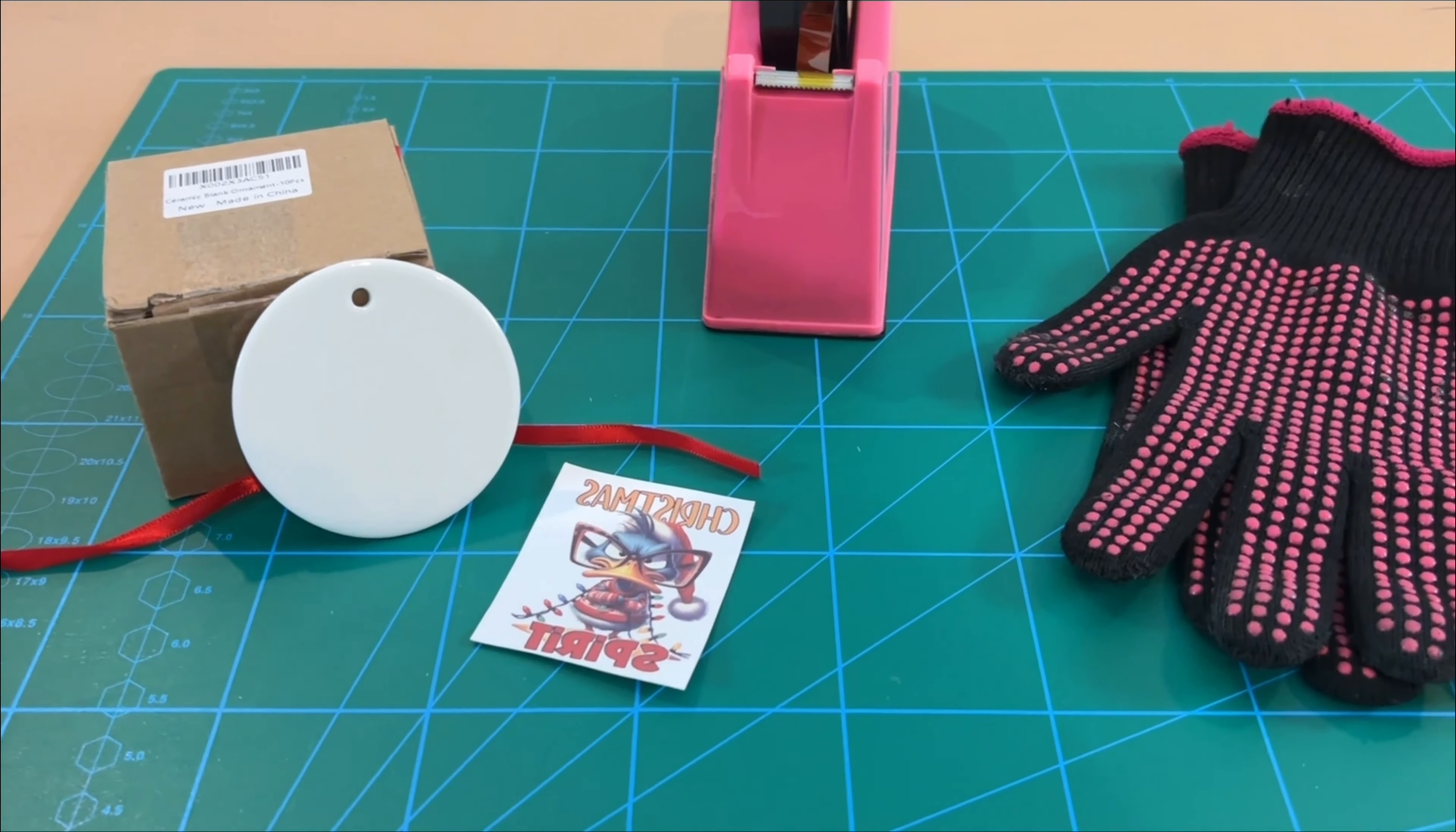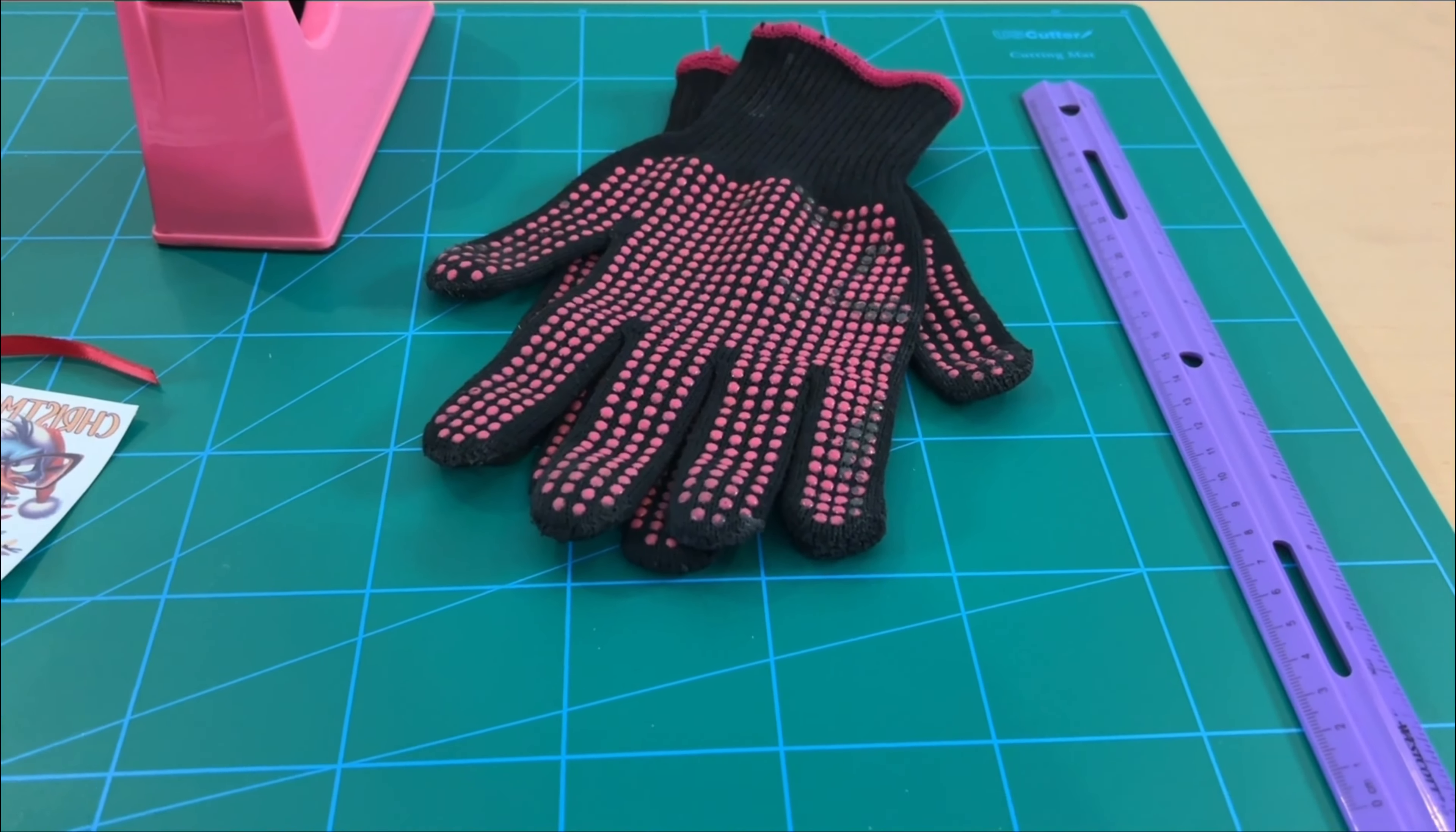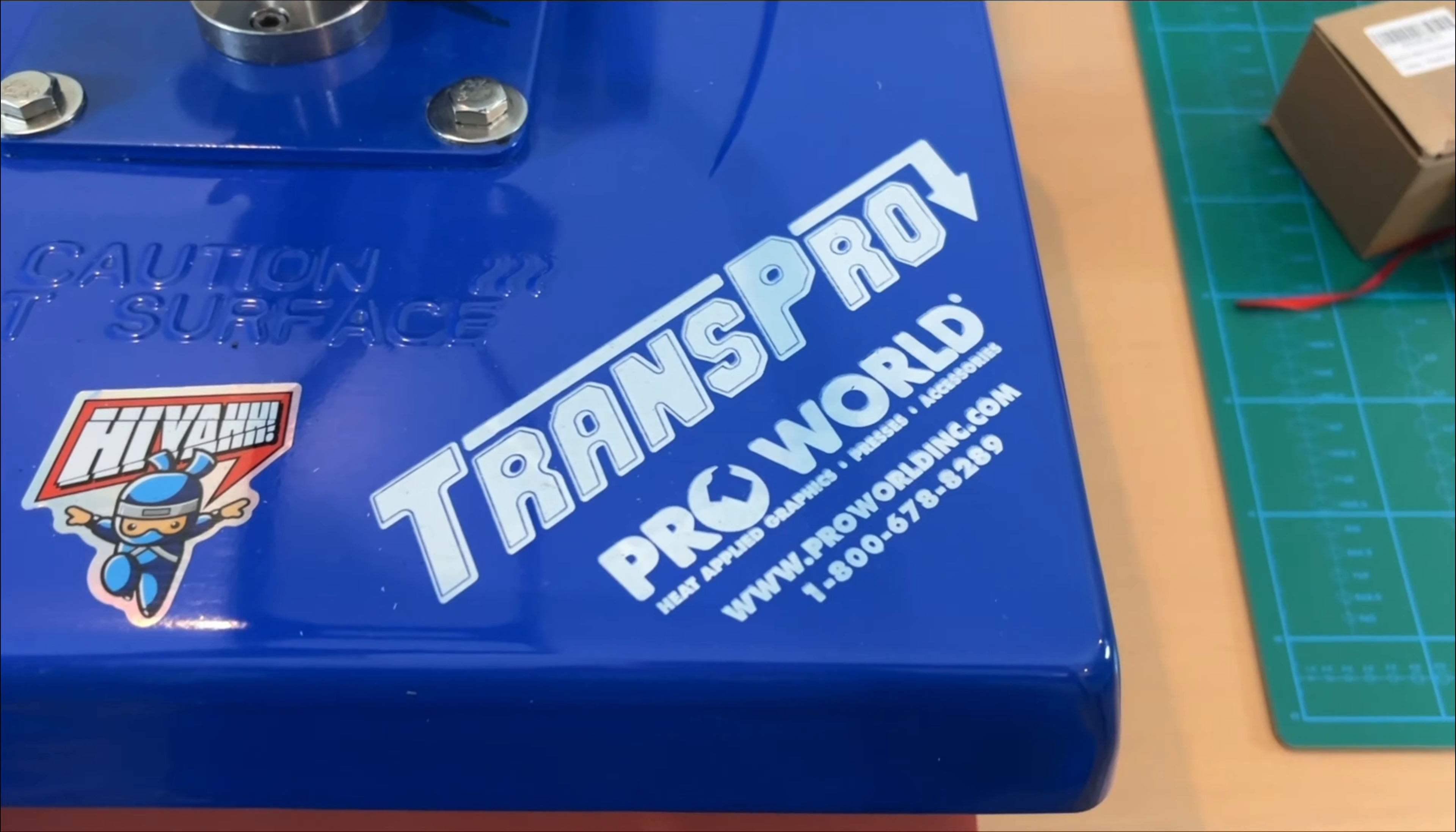You're going to need a couple items. Of course, your ceramic blanks, heat transfer tape, a roller, and our mittens so we don't burn our hands. The only large item you will need is a heat press, and I never recommend using a handheld press. A closed down or an automatic press is going to work best because of the pressure. I personally work with a TransPro 15x15.